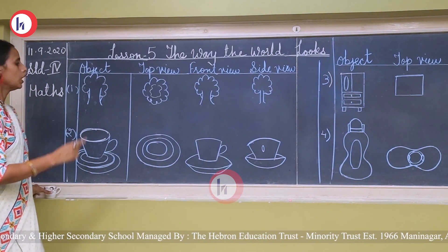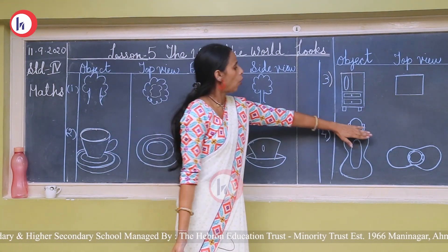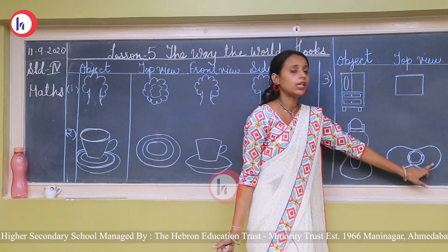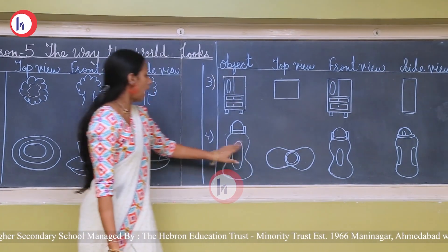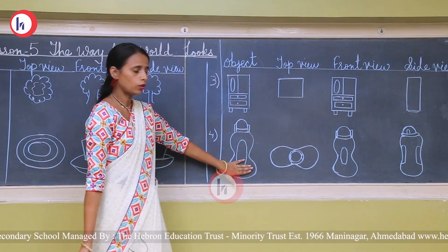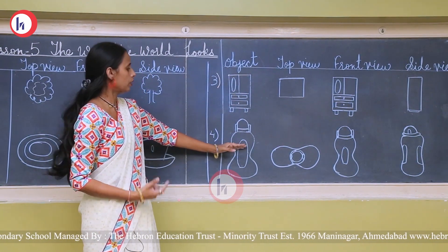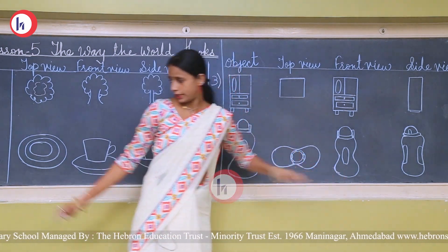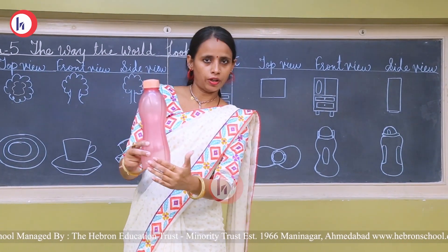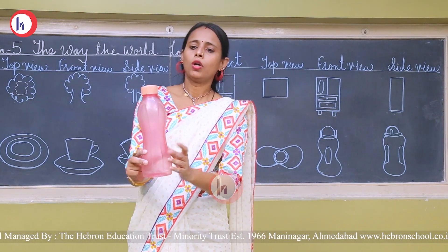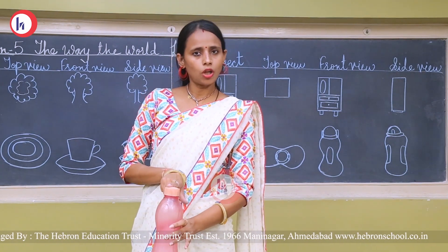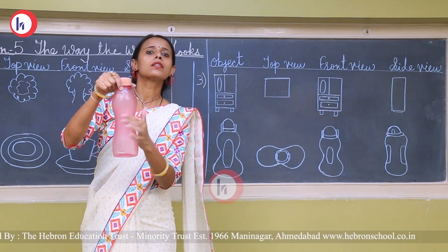Next is the water bottle. From the top, we can see only that part — that is the top view. The two sides are called side views. And the front view: if we see from the front side, it looks like this. We will take this water bottle as an example. From your side, this is the front view. From my side, this is the front view. If I see from the top, I can see only that part — so this is the top view, and the two sides are the side view.